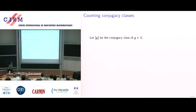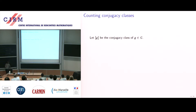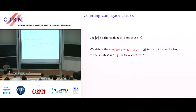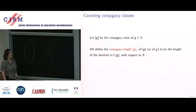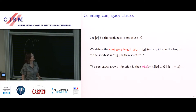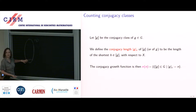I should define what the conjugacy length of a conjugacy class is. We denote the conjugacy class of an element g, and while this might be an infinite set — we're in infinite groups — somewhere in there there will be an element of shortest length. We look at that shortest element, and its length is the conjugacy length of g or of the conjugacy class, with respect to the generating set.